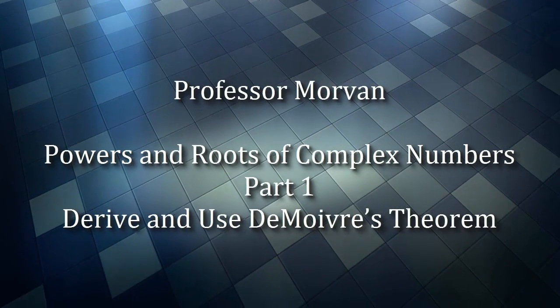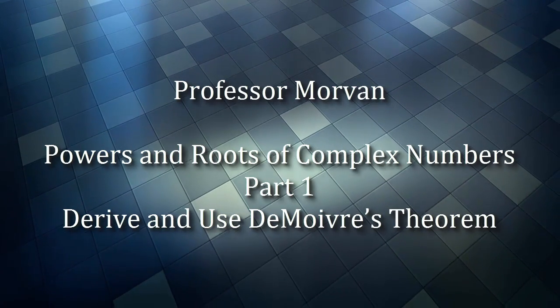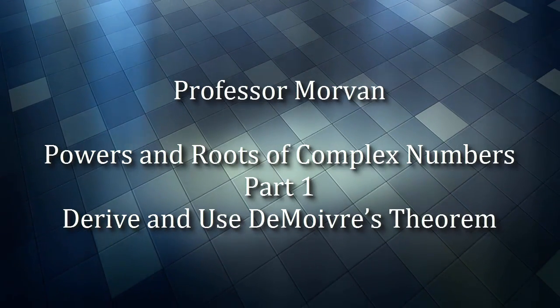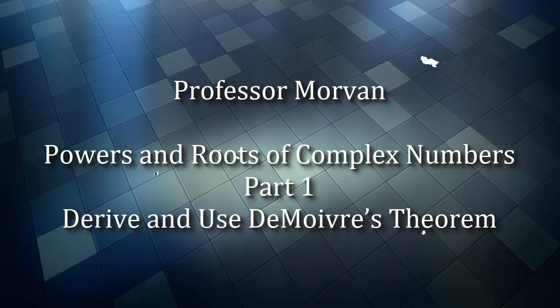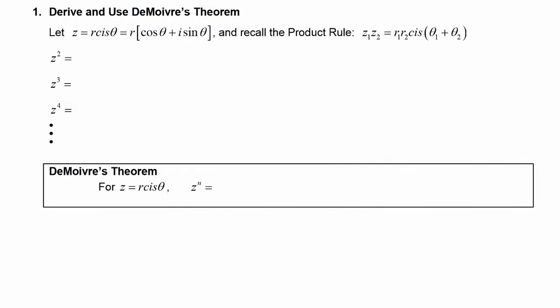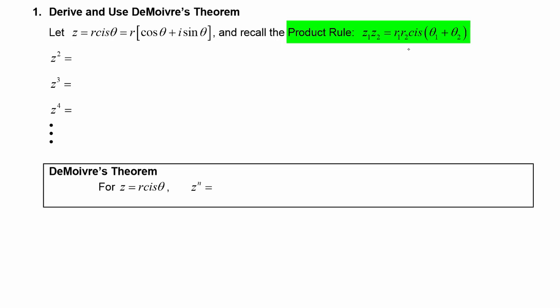In part one of our lesson on powers and roots of complex numbers, you will learn how to derive and use De Moivre's Theorem. We'll start off by letting z be the complex number r cis theta, which in expanded form is r times the quantity cosine theta plus i sine theta. Recall that the product rule is z1 times z2 equals r1 times r2 cis theta1 plus theta2.